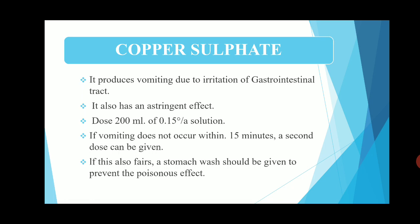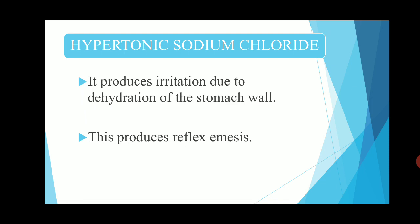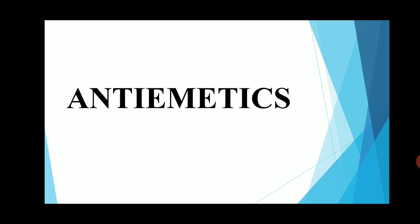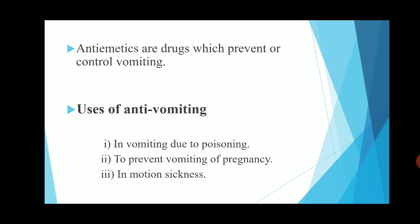So these are the emetics — drugs which produce emesis. They are used in treatment of poisoning or suicidal conditions where a toxic drug has been administered, to remove it from the stomach or gastrointestinal tract. Anti-emetics, on the other hand, are drugs or agents used to prevent or control vomiting.